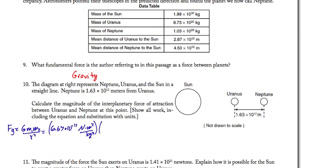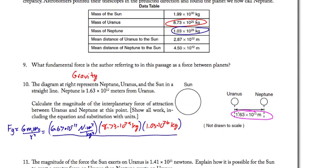The mass of Uranus I can get from our table up here. I can also get the mass of Neptune to fill in my formulas. 8.73 times 10 to the 25th kilograms and 1.03 times 10 to the 26th kilograms.